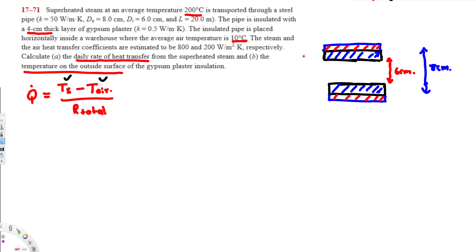Since the insulation is 4 cm thick on each side, the total outer diameter becomes 8 + 4 + 4 = 16 cm. So the diameters are: inner steel 6 cm, outer steel 8 cm, and outer insulation 16 cm.